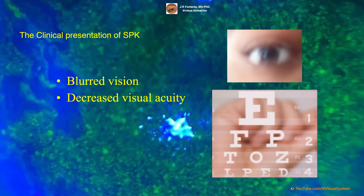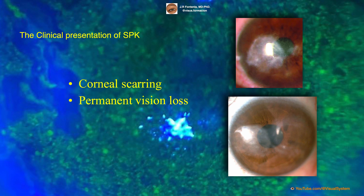Patients may also experience visual disturbances such as blurred vision and decreased visual acuity, especially if the erosions are located in the visual axis. In severe cases, it can lead to corneal scarring and permanent vision loss.